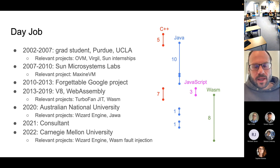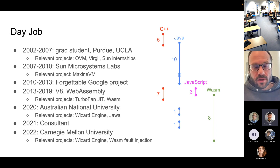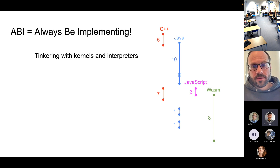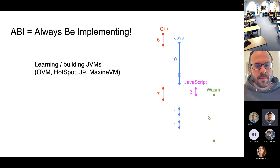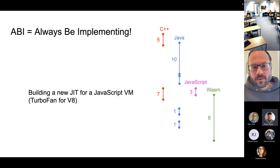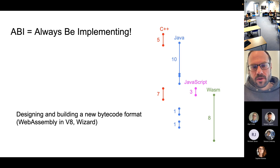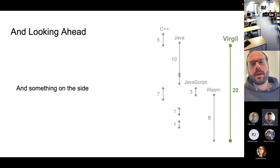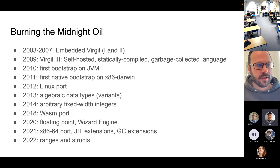Fast forward to now: I'm at Carnegie Mellon. I've spent a lot of time working in various languages — C++, Java, JavaScript, and WebAssembly. The lesson is that if you want to learn about this stuff, you should always be implementing things. In the early days, tinkering with kernels and interpreters in C++, then JVMs, then the JavaScript VM, and now WebAssembly — originally in V8 but now in the research engine Wizard. Virgil has been my side project, where I've been nursing compiler and GC ideas for almost 20 years.